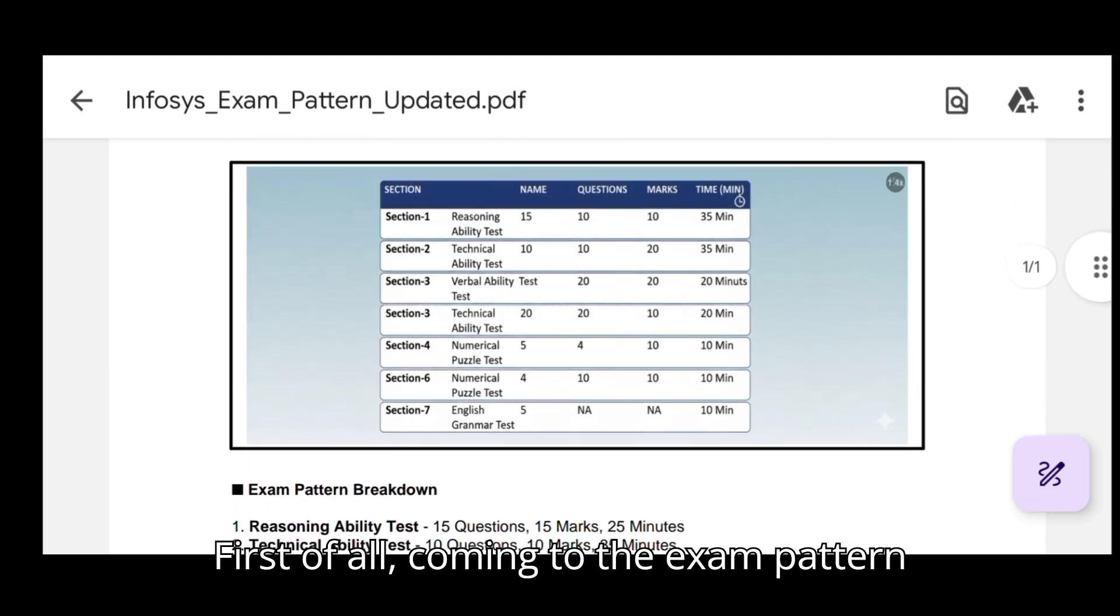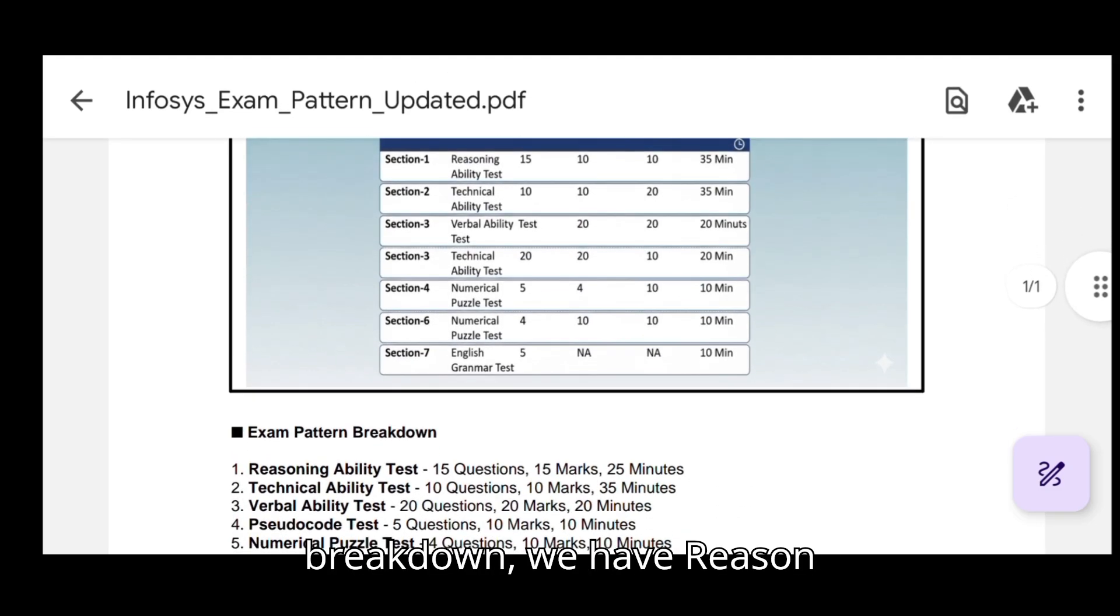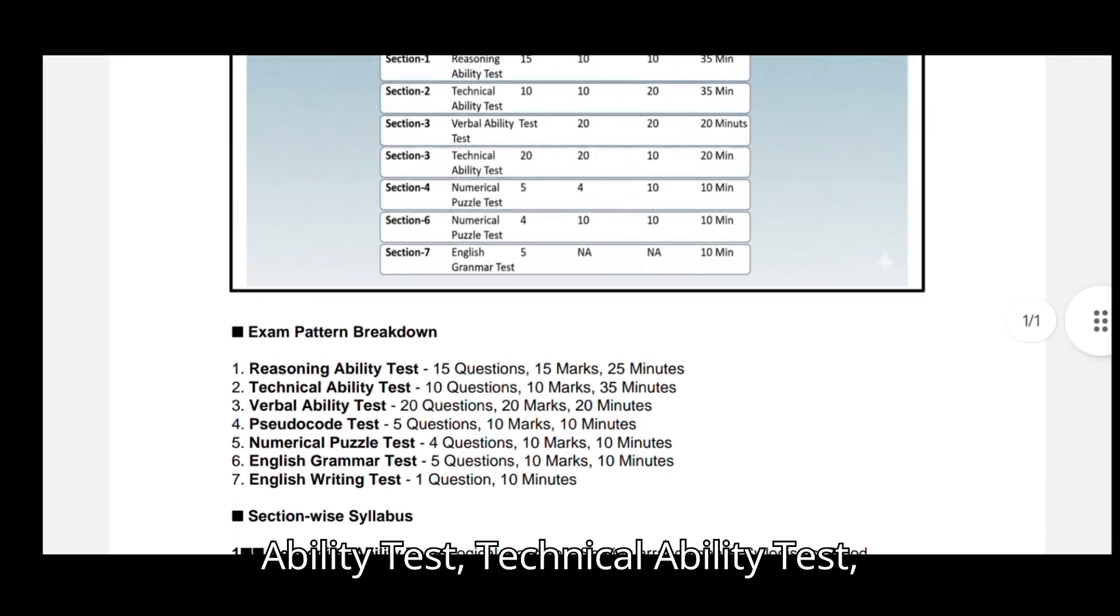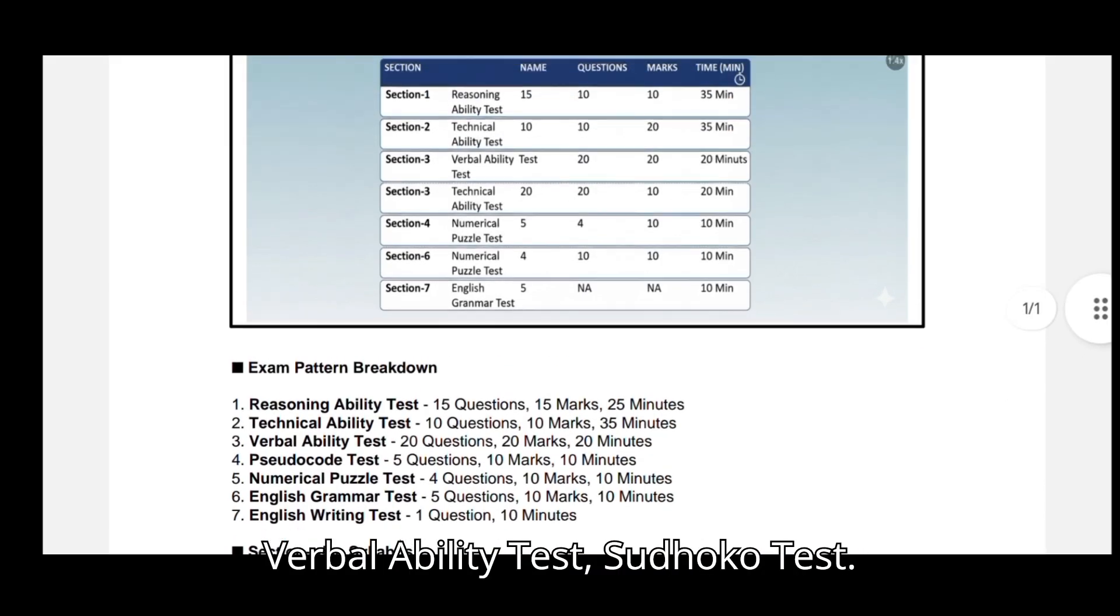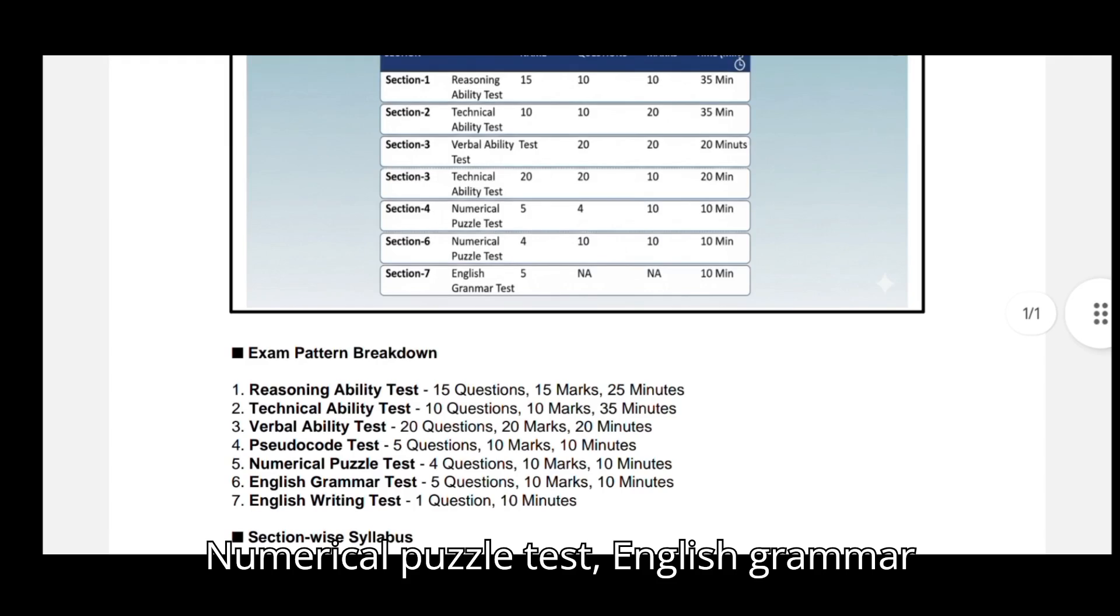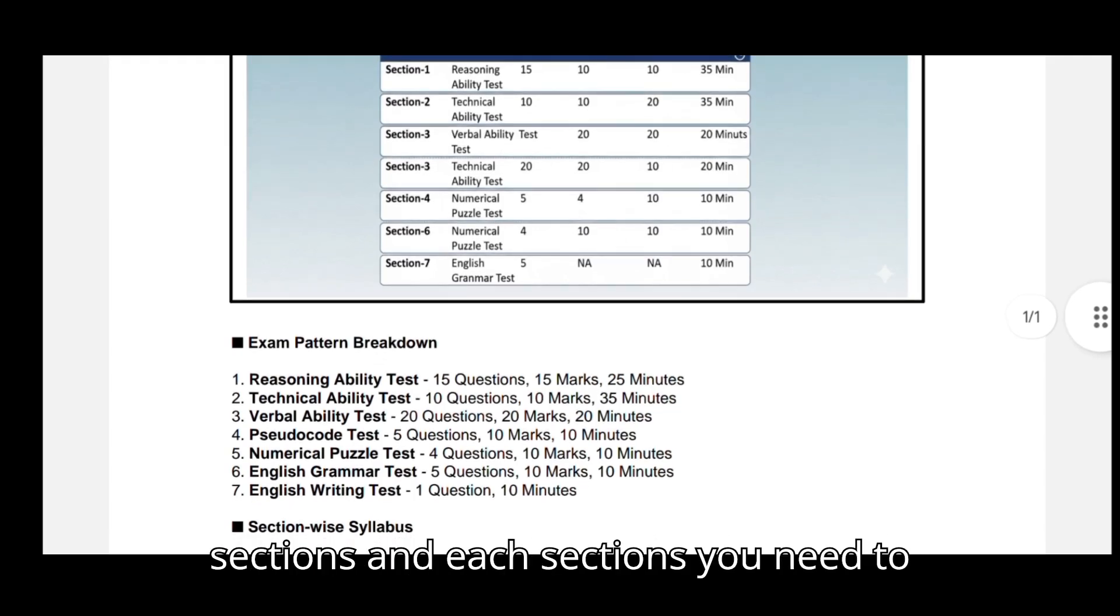First of all, we are coming to the exam pattern breakdown. We have reasoning ability test, technical ability test, verbal ability test, pseudocode test, numerical puzzle test, English grammar test, and English writing test. There are seven sections and each section you need to crack cut-off marks.